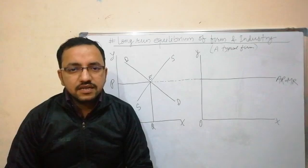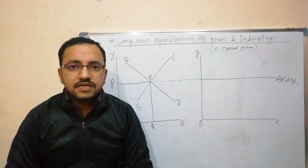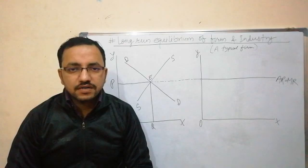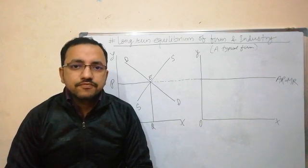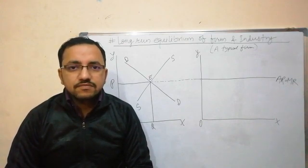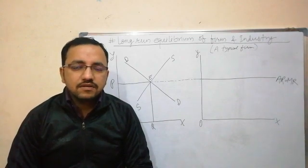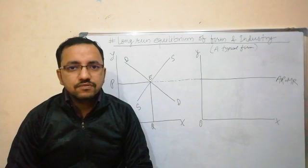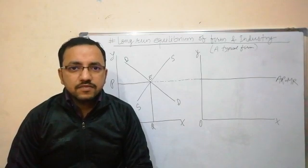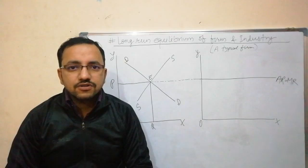An industry is a collection of many firms producing homogenous products. An industry can be in equilibrium when it fulfills two conditions: number one, market demand should be equal to market supply; and number two, all the firms in the industry should be in equilibrium.